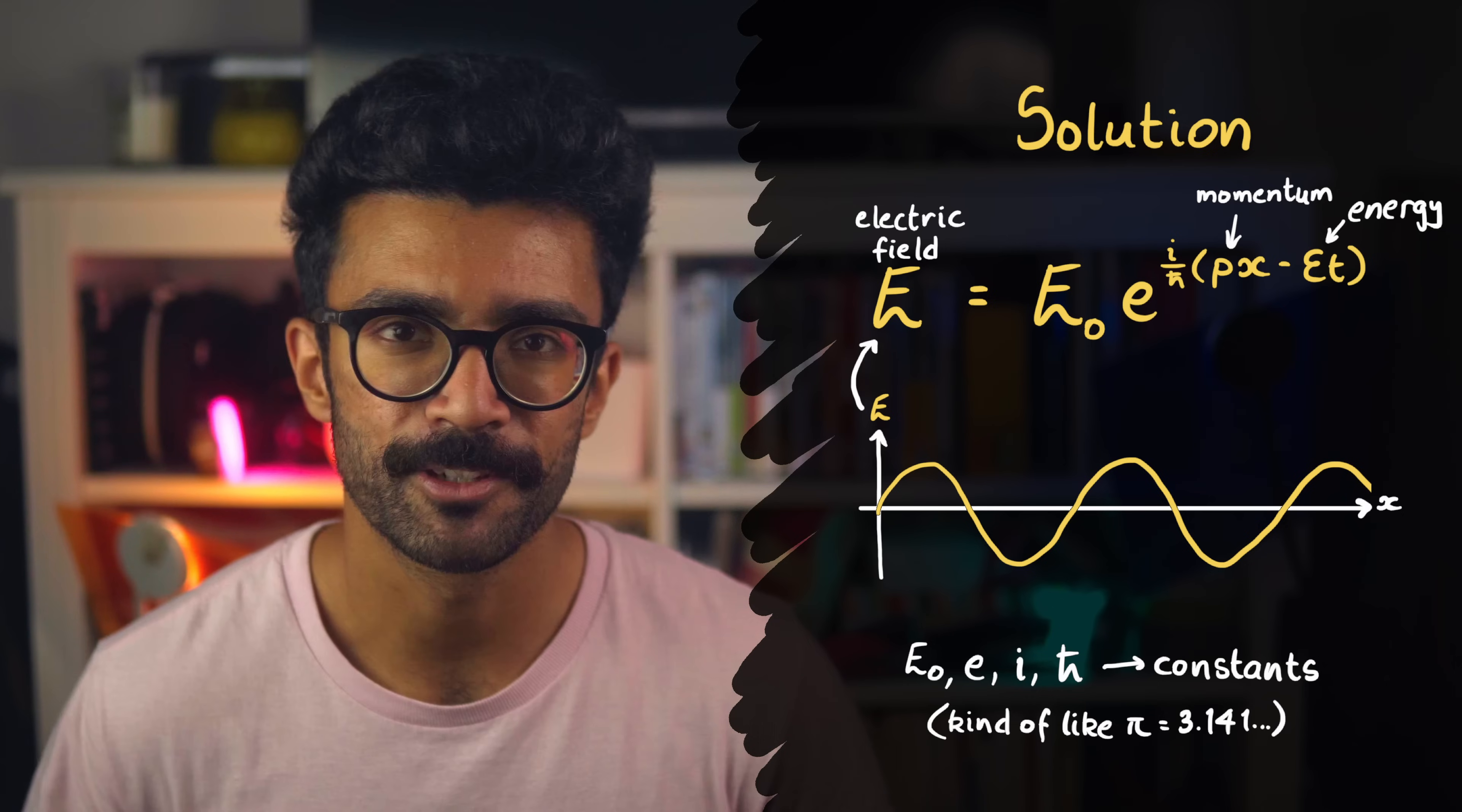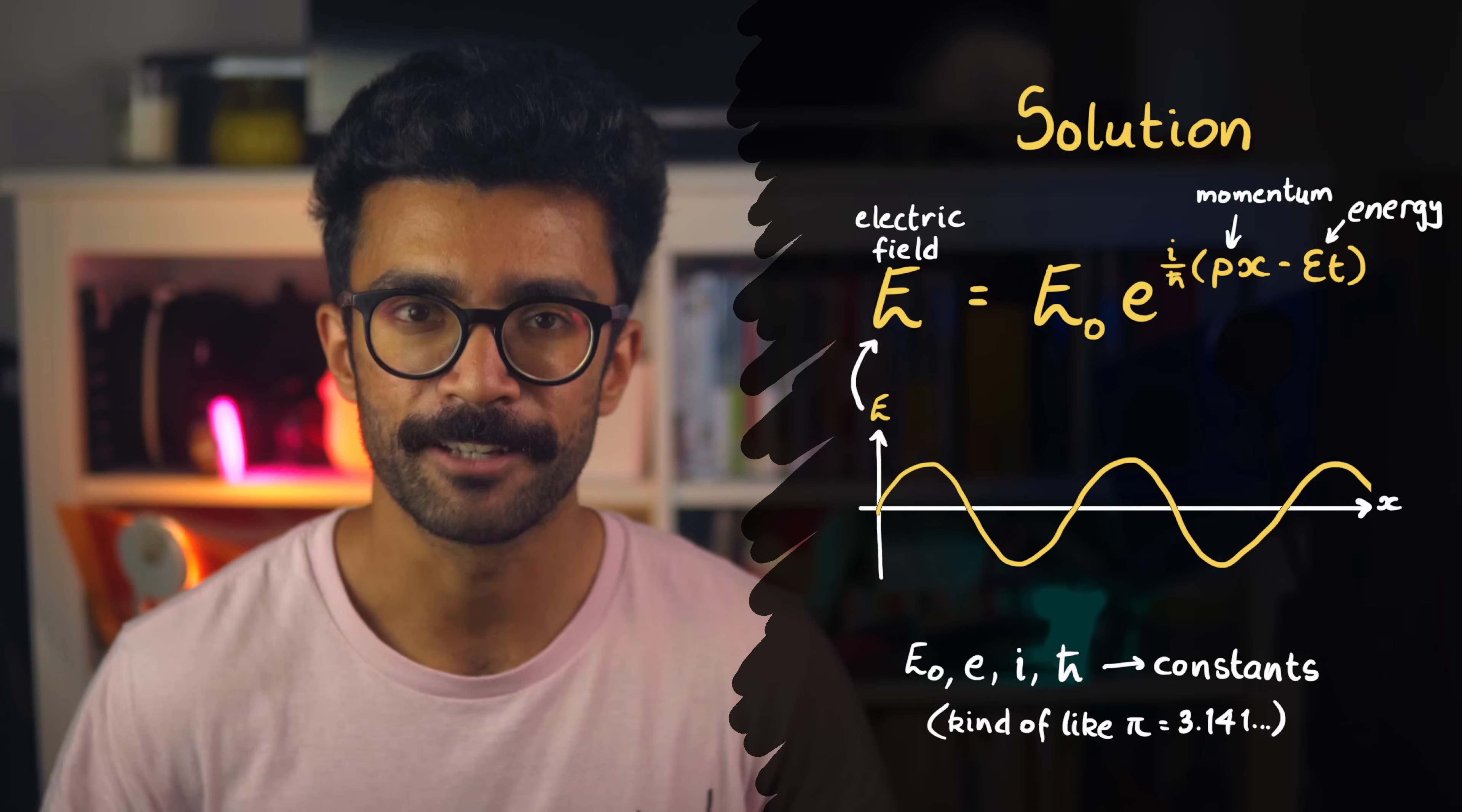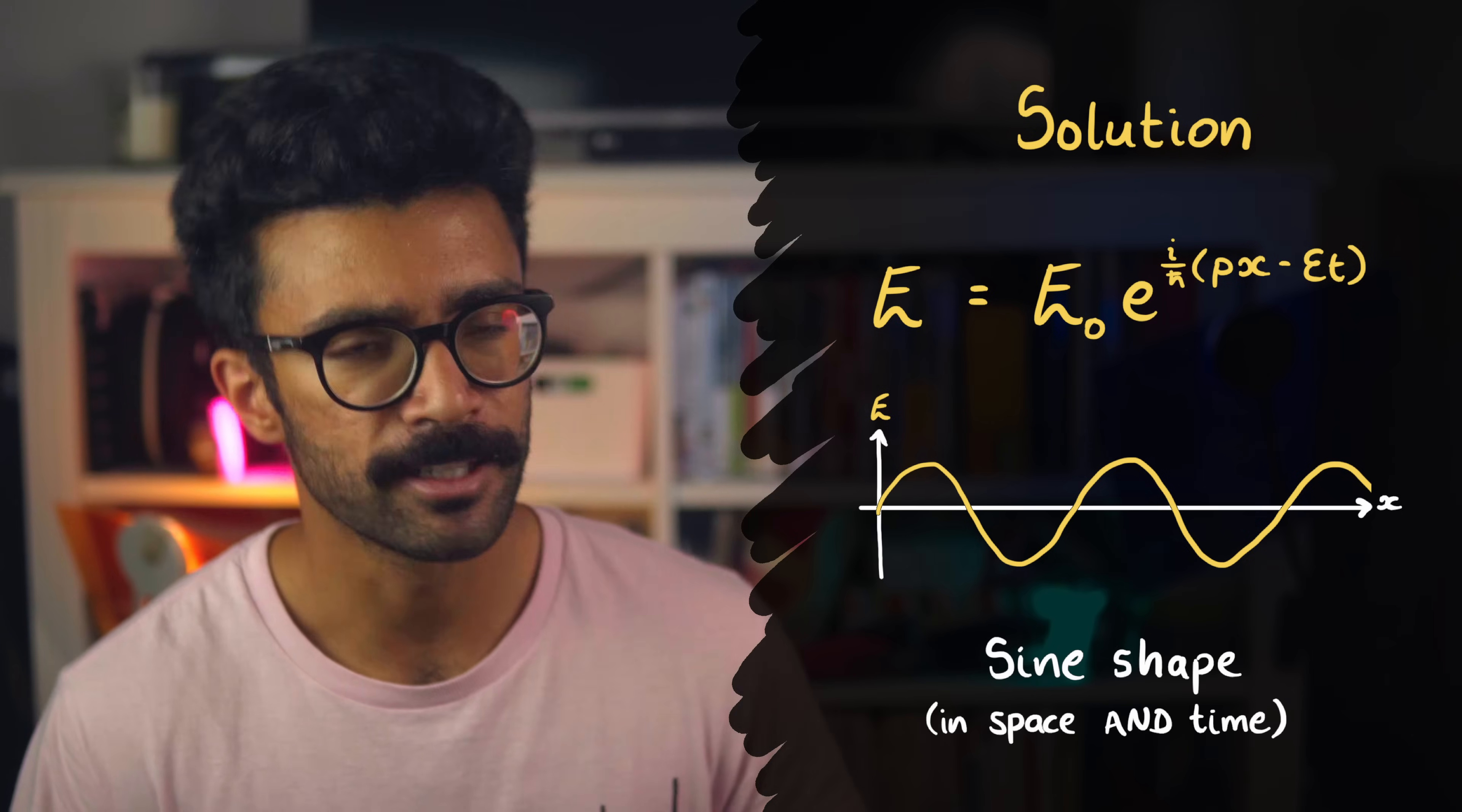But basically, the wave that we're studying looks like a sine curve in shape. This means that for a particular point in time, like we've got this snapshot of the wave here, as we move through space, in the x direction, the value of the electric field oscillates like a sine curve between e₀, and then 0, and then minus e₀, and then back to 0 again, and so on.